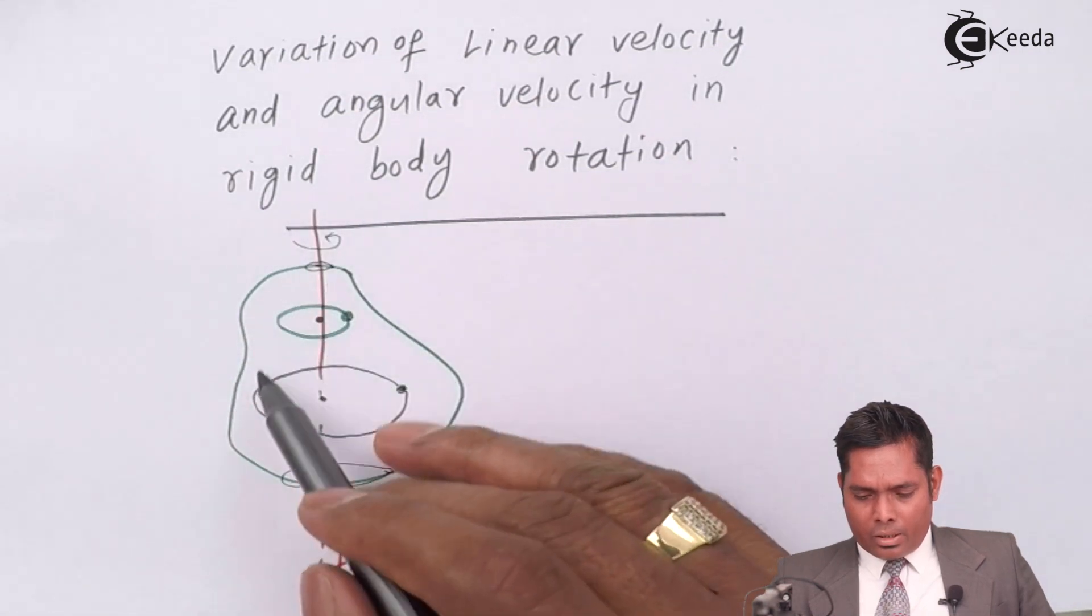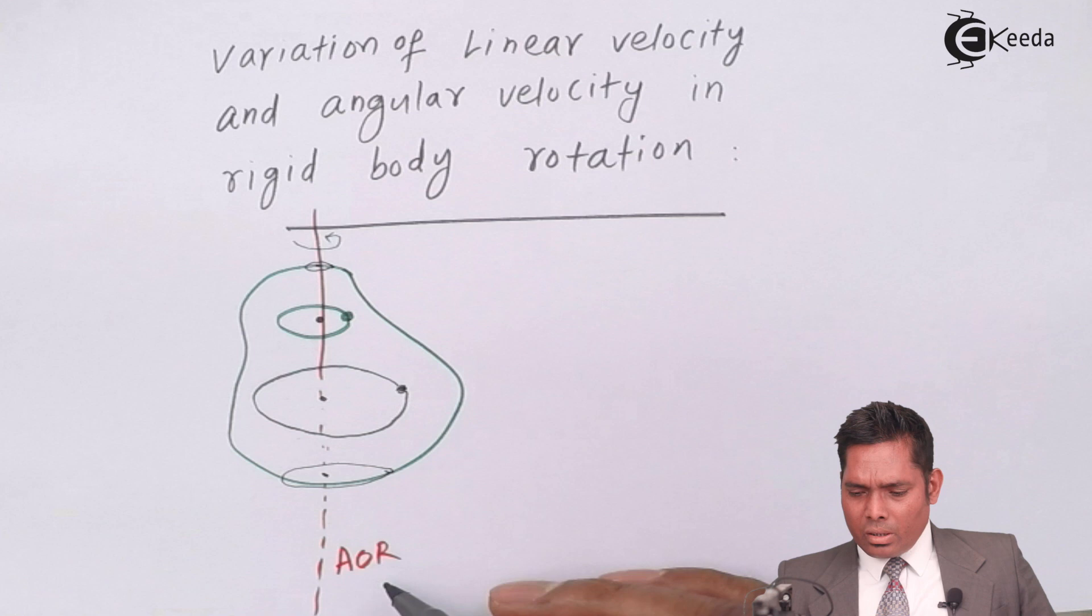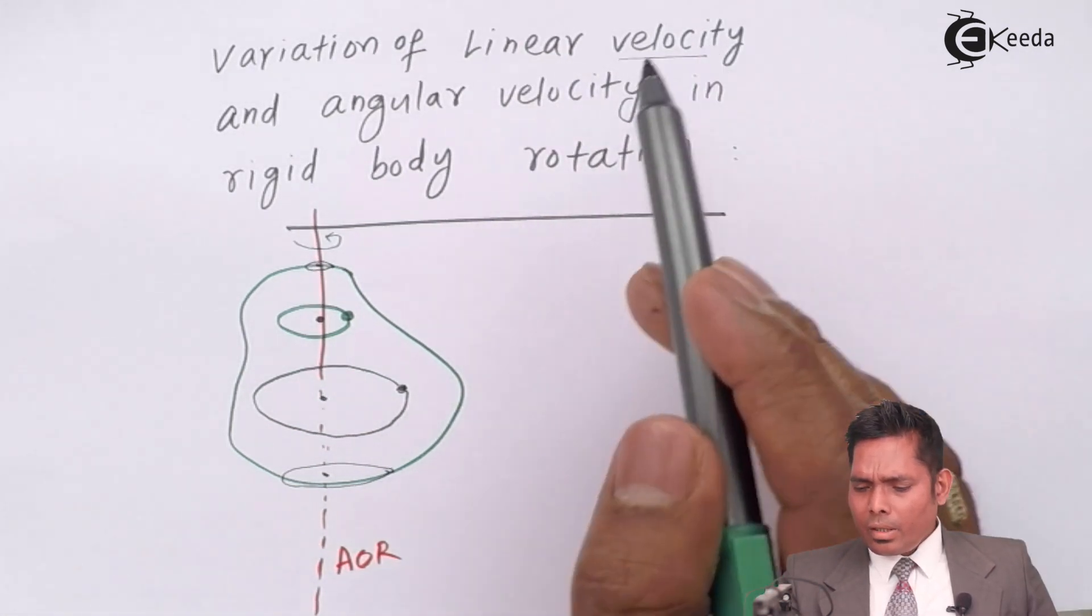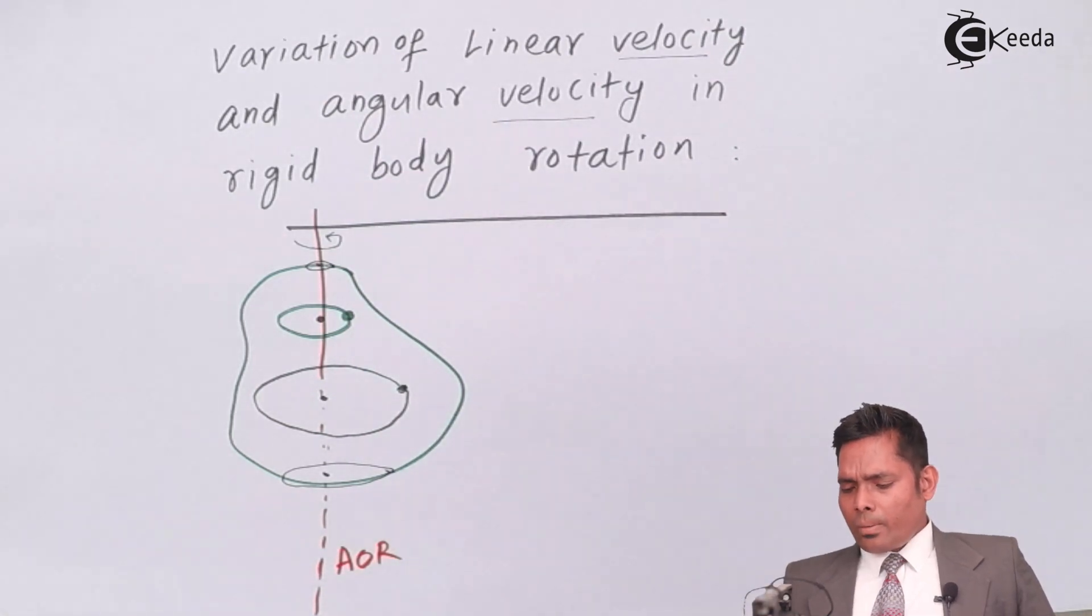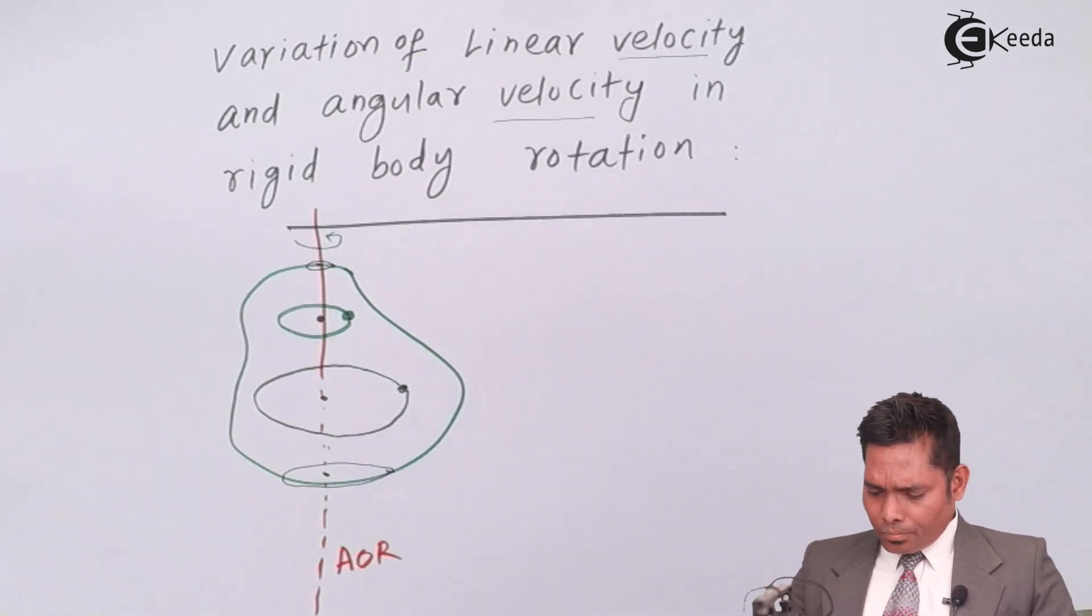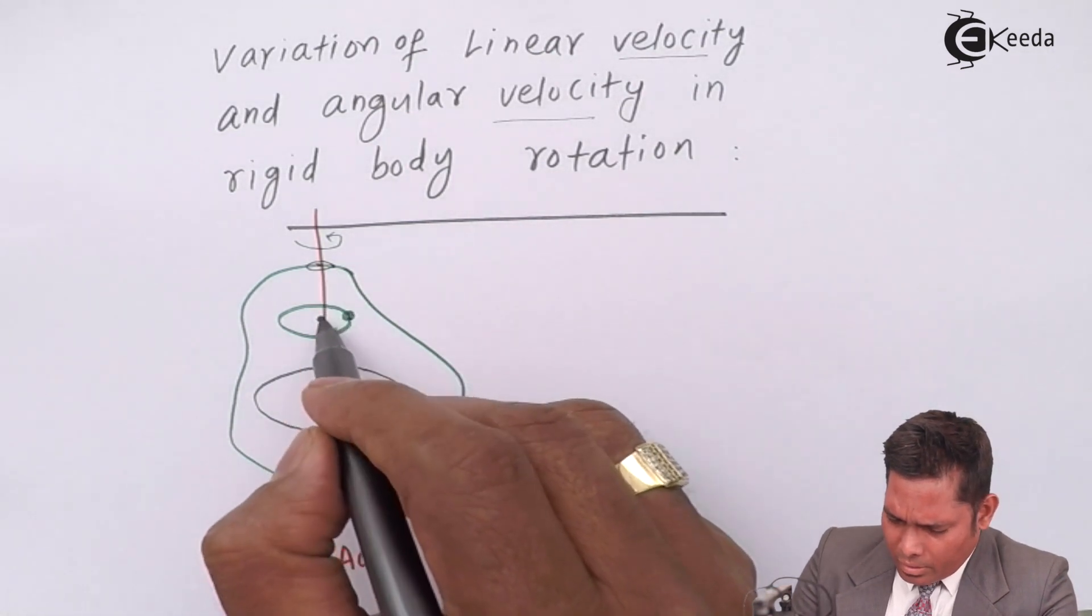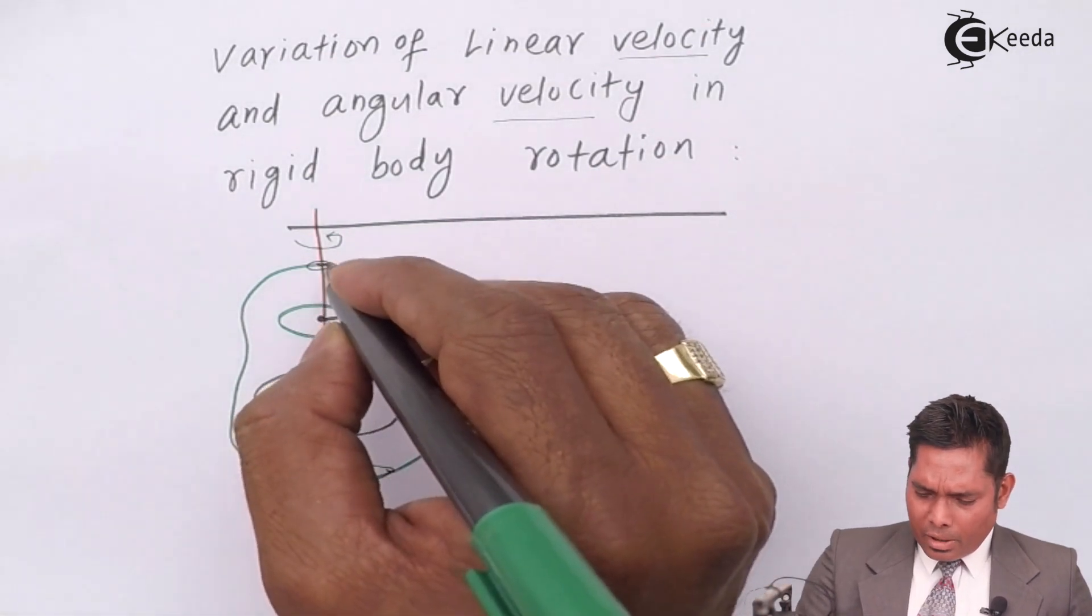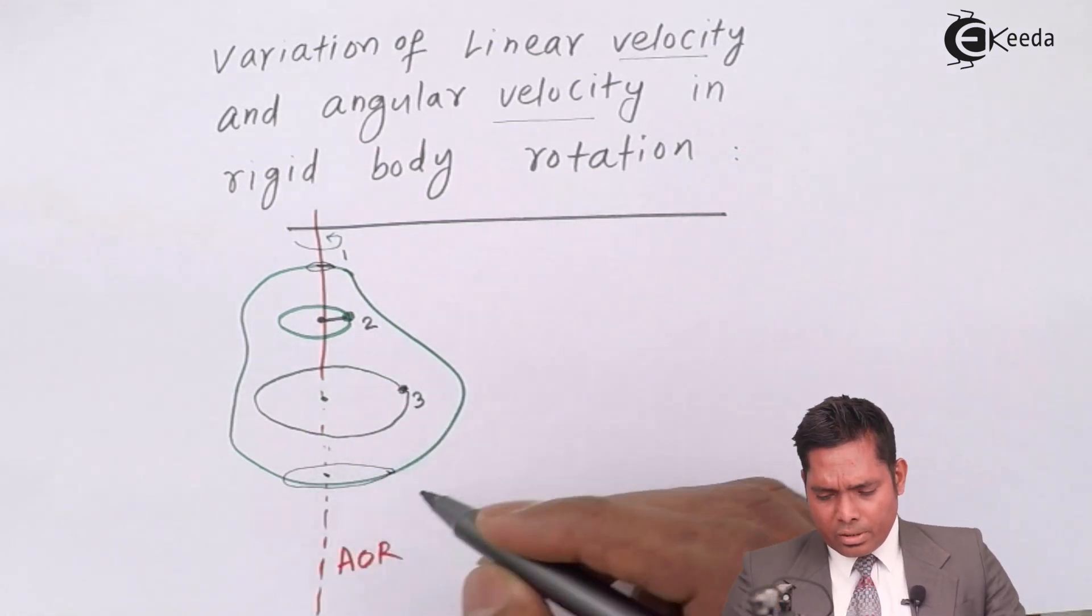Now rigid body is understood, rotational axis is also understood, axis of rotation. Now we consider how this linear velocity and angular velocity varies. As we move away, for this particle this is the radius. Suppose this is particle number 1, this is particle number 2, and this is particle number 3.